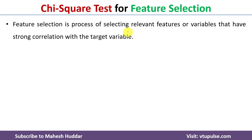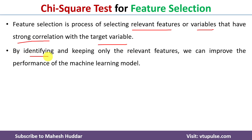Feature selection is a process of selecting relevant features or variables that have strong correlation with the target variable. By identifying and keeping only the relevant variables, we can improve the performance of a machine learning model.